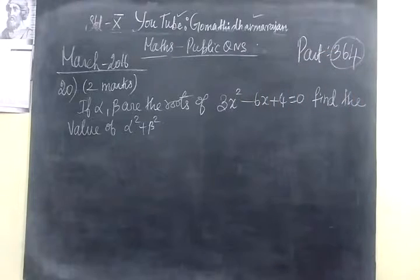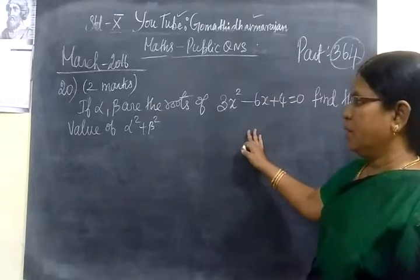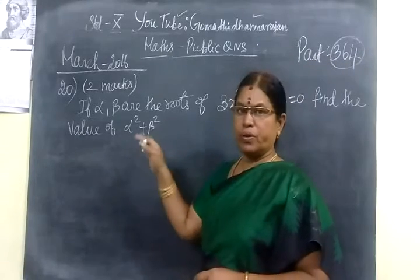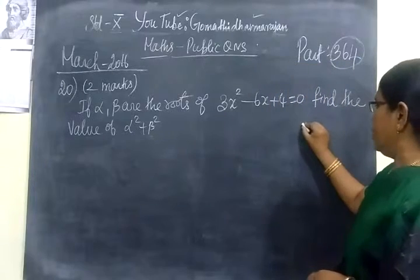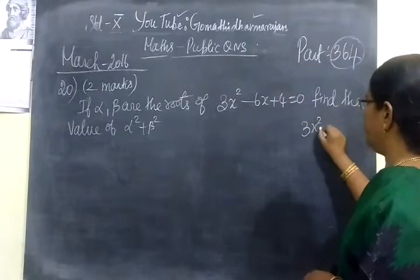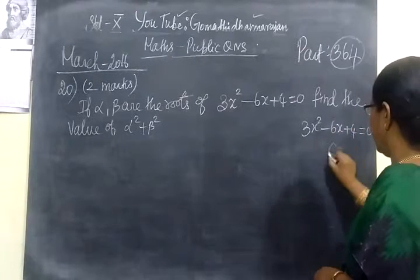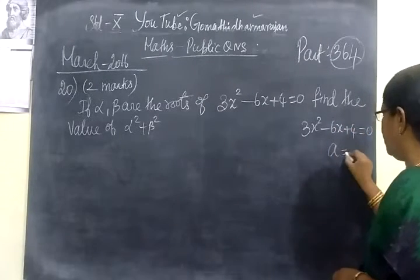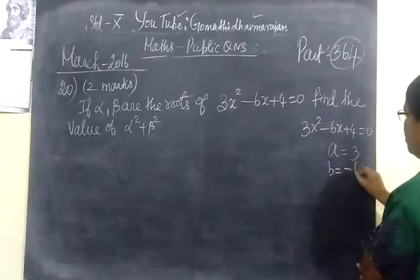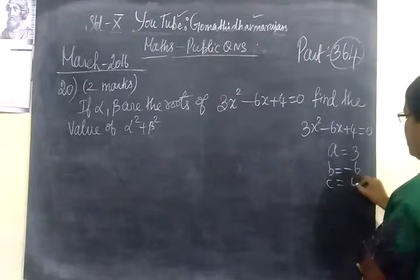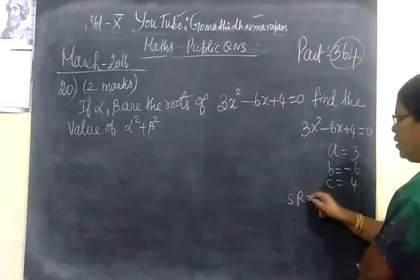Alpha and beta are the roots. So, we have to find alpha square plus beta square. Here, A value is 3, B value is minus 6, and C value is 4. And the sum of the roots — sum of the roots is SR.